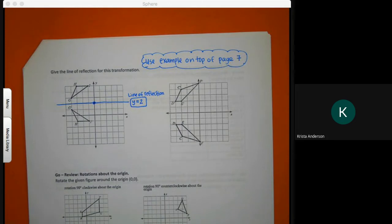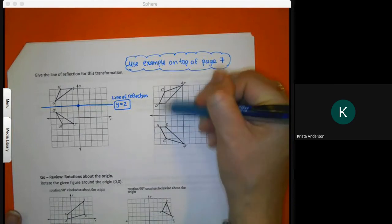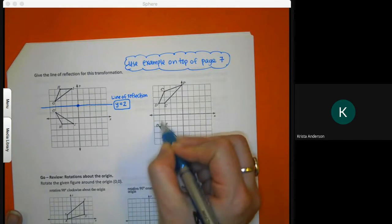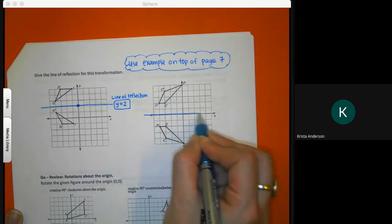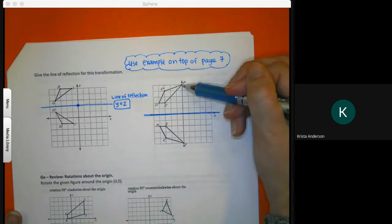For the question on the right, when I look at these two points, I draw a line down the middle. You'll notice that this is 2 away, 2 away. So my line I would draw would be right here in the center, so that they're equal distance from the reflection line.